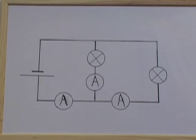If we now draw out a branched or parallel circuit, this includes three ammeters, one in the main part of the circuit and one in each of the branches.